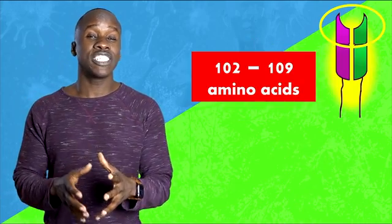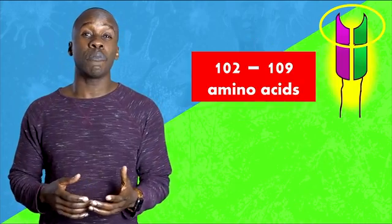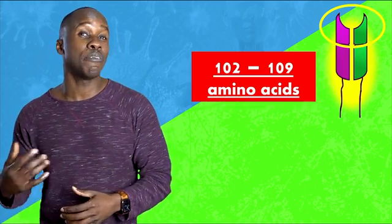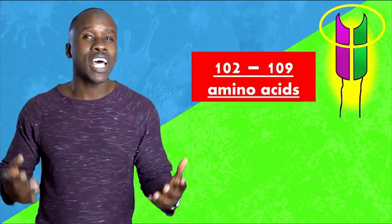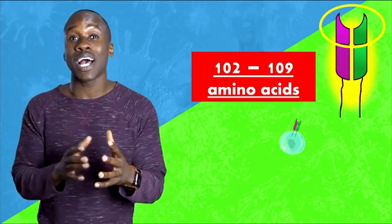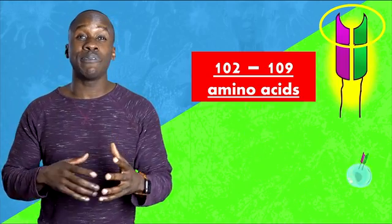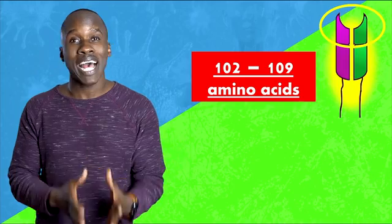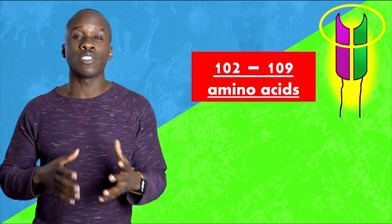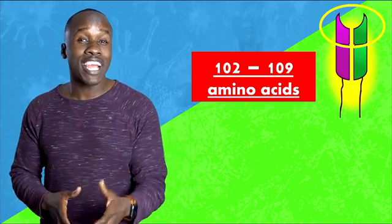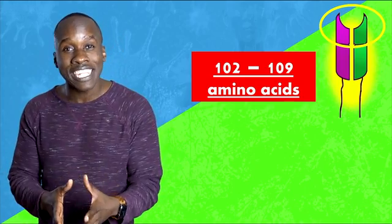The variable regions of these receptors are made up of about 102 to 109 amino acids. This gives us a whole lot of possible combinations of amino acids, and that's why we're able to recognize so many different pathogens. Each of these cells has one kind of receptor that recognizes one specific antigen.